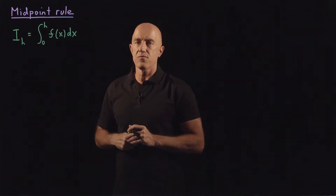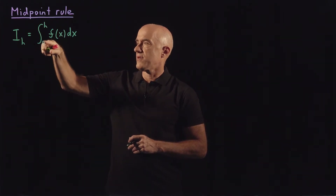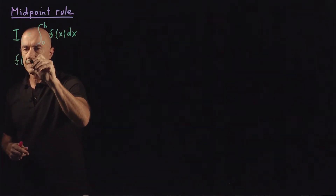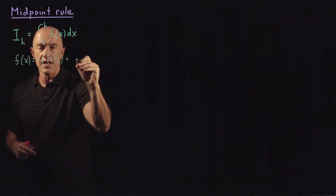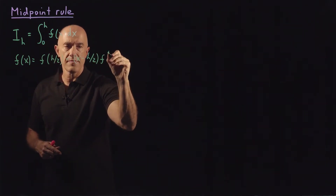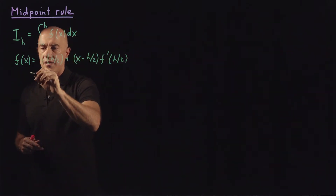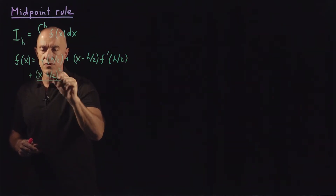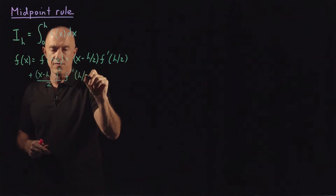To derive the midpoint rule, we Taylor series expand f of x about the midpoint of the interval, which is h over 2. So we write f of x equals f of h over 2, plus x minus h over 2 times f prime of h over 2, plus x minus h over 2 squared over 2 factorial times f double prime of h over 2.